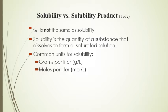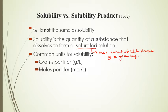Solubility is the quantity of a substance that dissolves to form a saturated solution — saturated meaning the maximum amount of solid that will dissolve at a given temperature. Solubility will change, sometimes increasing or decreasing depending on the salt. Common units for solubility are grams per liter or moles per liter. To do these types of problems we need molarity, so if you have grams per liter, convert grams into moles.